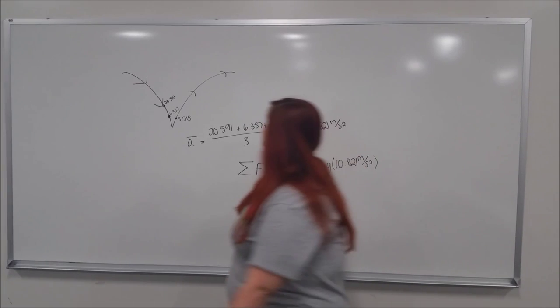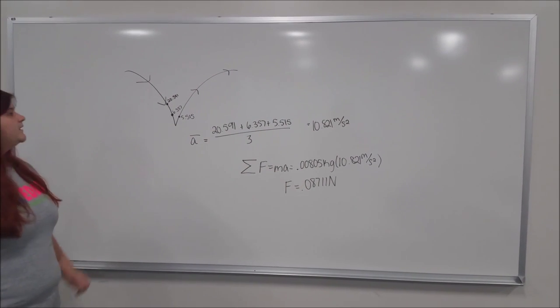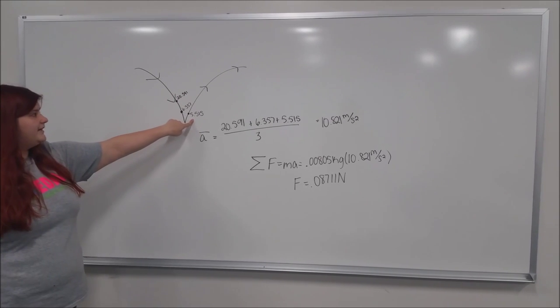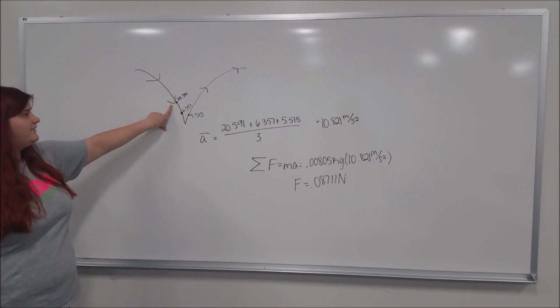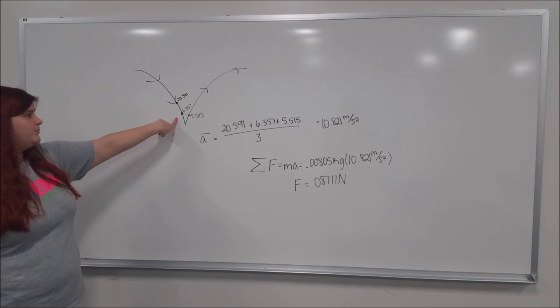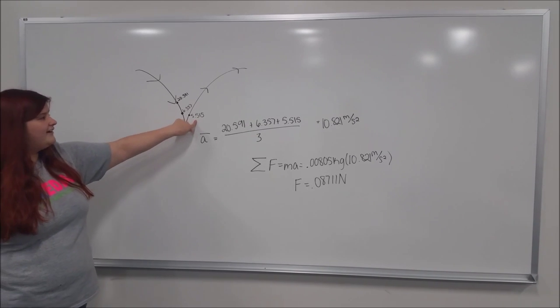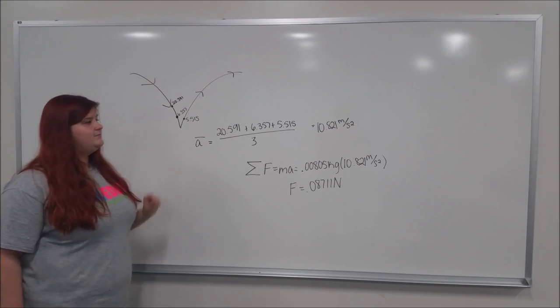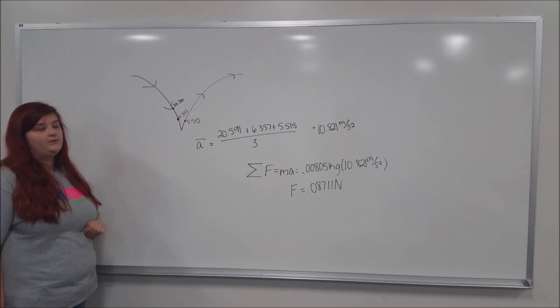This is kind of a model of what Tracker gave us. I took these three accelerations, 20.591, 6.357, and 5.515, and I averaged these accelerations to get 10.821 meters per second squared.